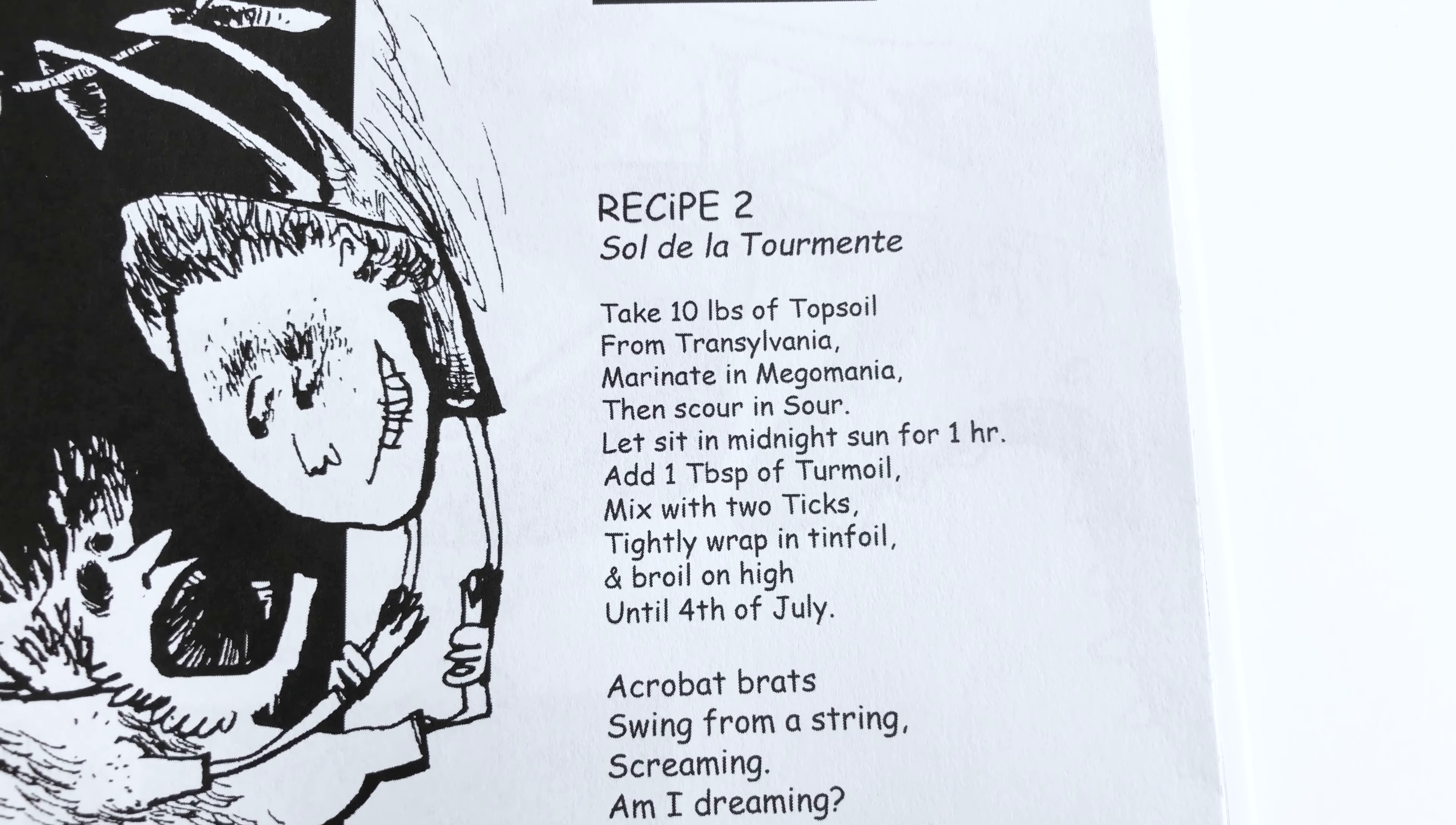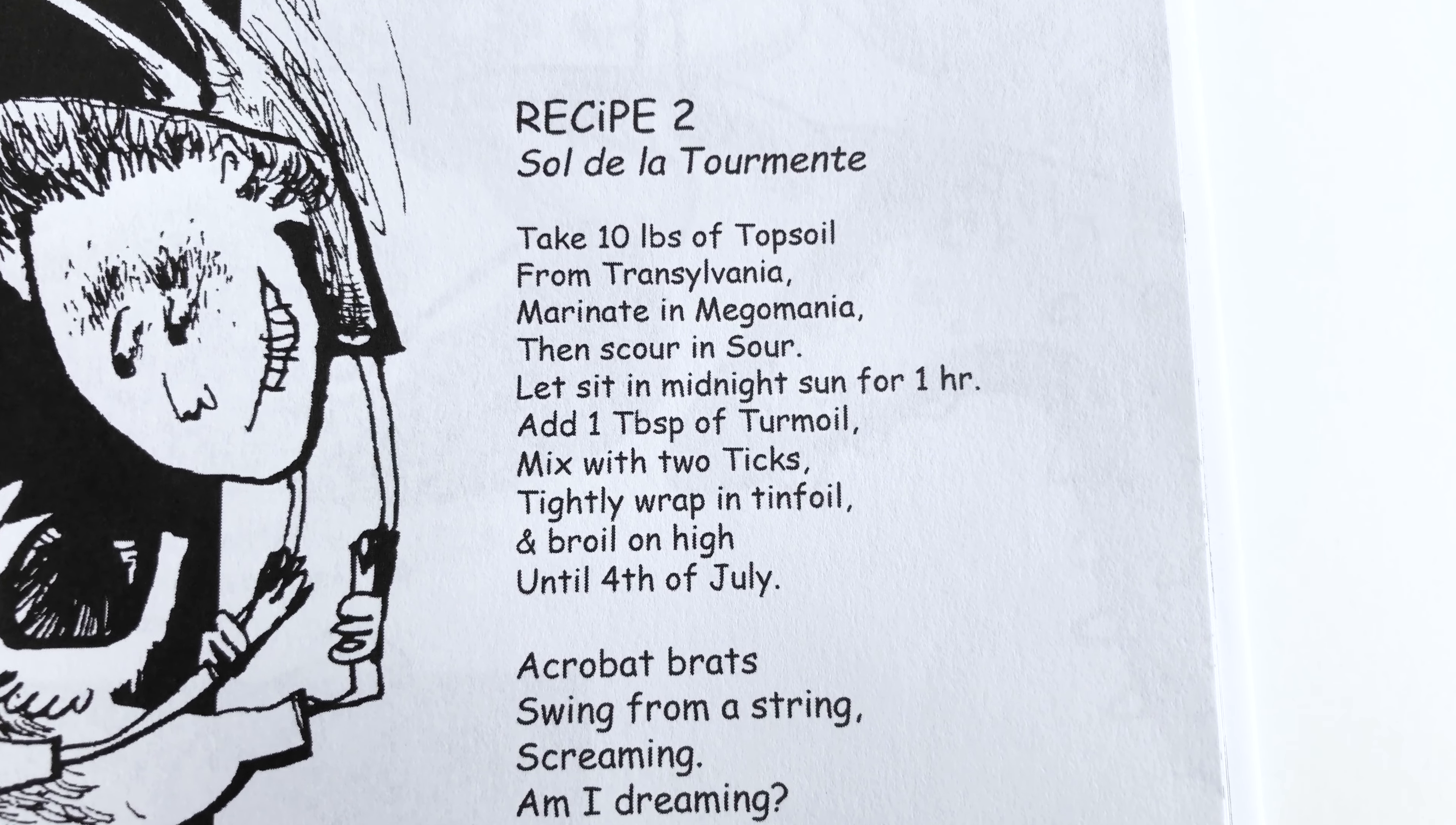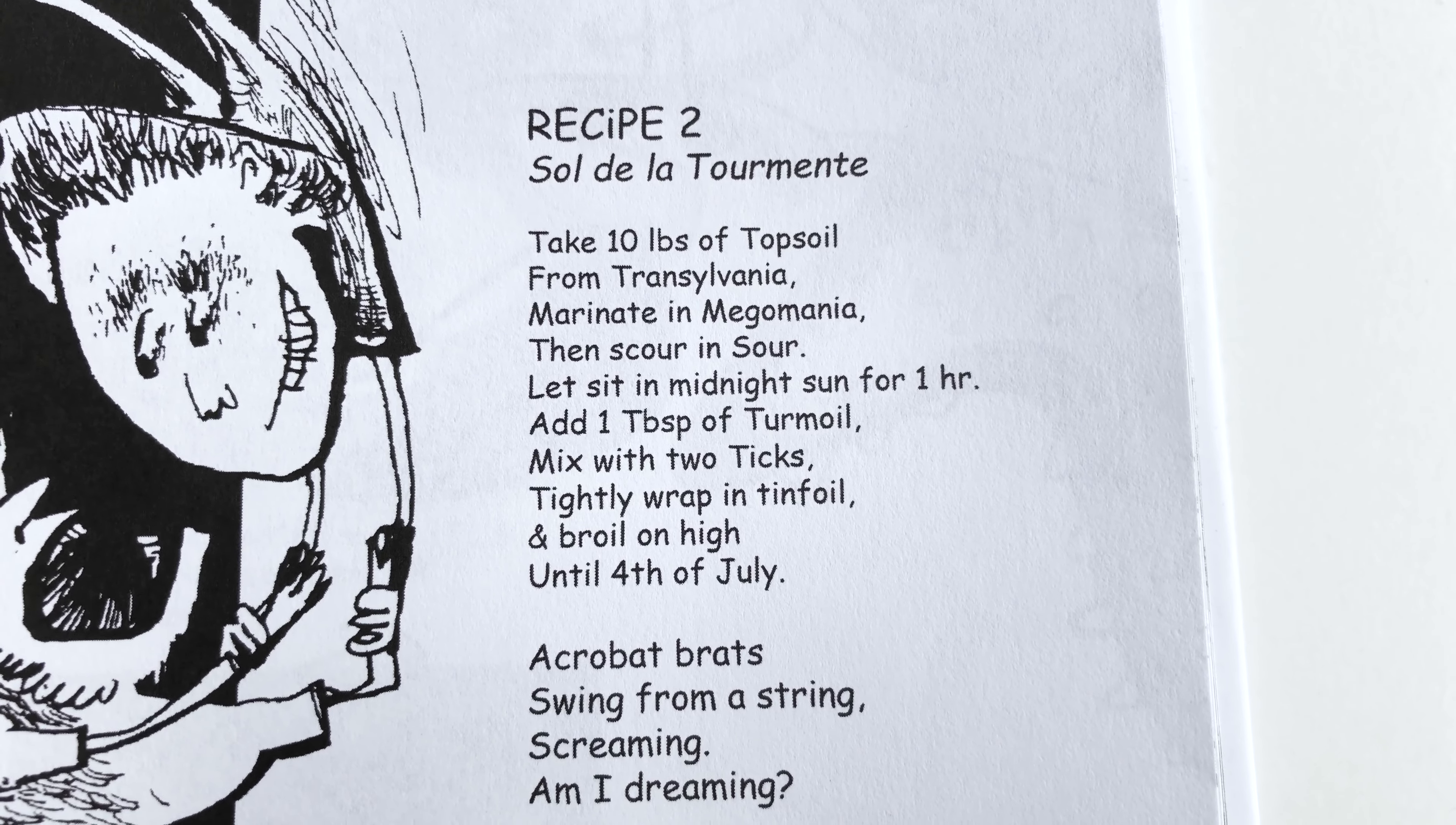Again in French, the title. I have no idea what it means. I'm sure it means something. Take 10 pounds of topsoil from Transylvania, marinate in Megamania, then scour in sour. Let sit in midnight sun for one hour. Add one tablespoon of turmoil, mix with two ticks, tightly wrap in tinfoil and broil on high until 4th of July.